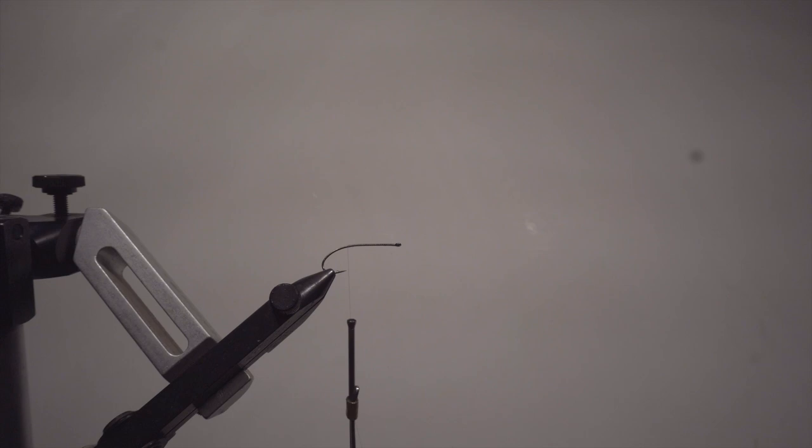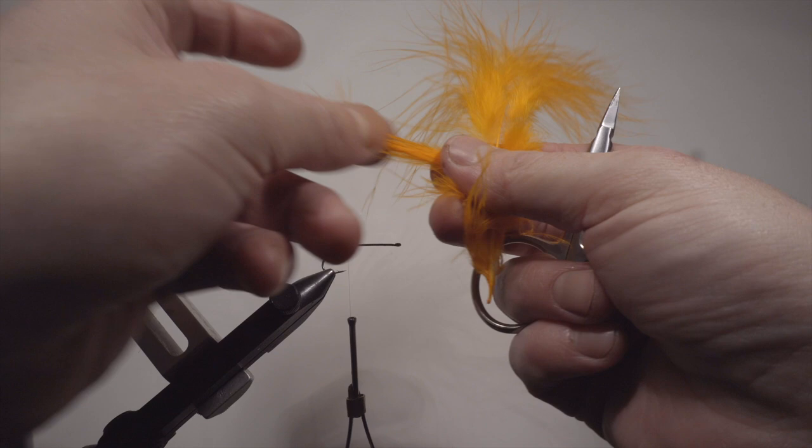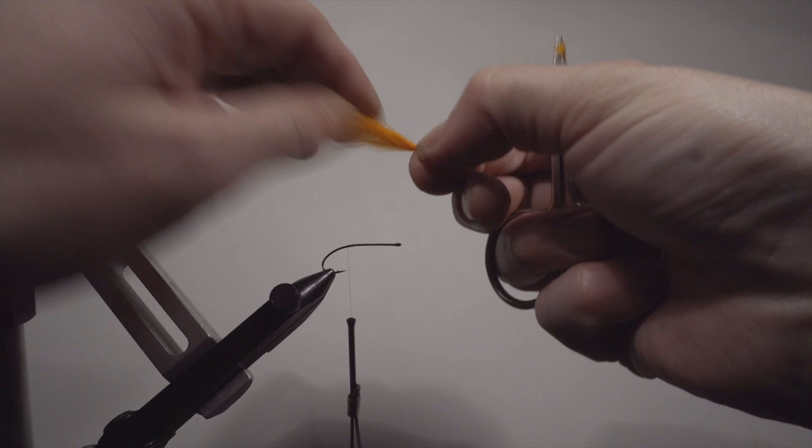This fly just contains marabou and the original one was made with orange, so we're going to tie that. You can be more prepping like cutting and making dubbing and everything. We are just going to cut or pinch out here what we use.